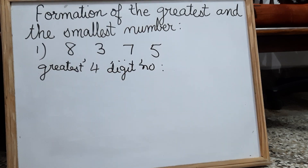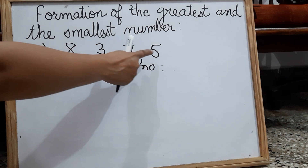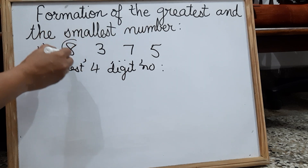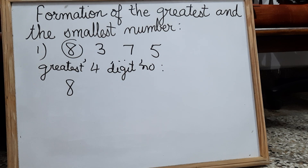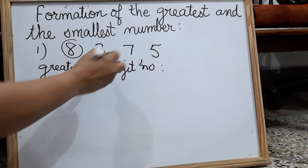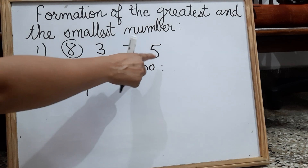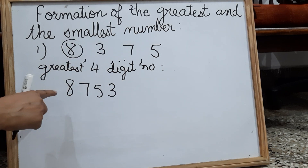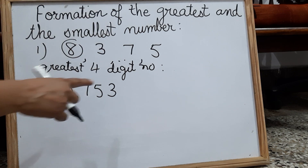So how to form the greatest four digit number? The first rule is: start with the greatest digit. Out of these four digits, eight is the greatest digit. So we will start with eight. After eight, the next greatest is seven, then five, and then three. So it became eight thousand seven hundred and fifty-three — 8753. This is the greatest four digit number using the digits eight, three, seven, and five.